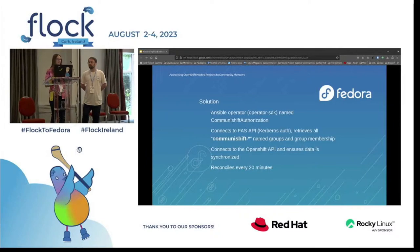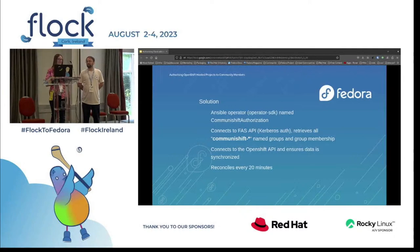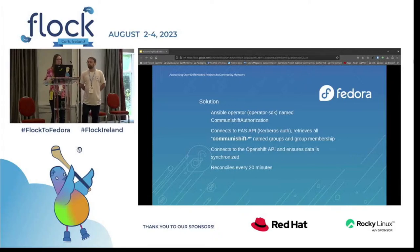We named our operator the CommunityShift Authorization operator. It connects to FAS — for those who don't know, FAS is a JSON gateway that queries FreeIPA, built for the Fedora account system. The operator connects through a keytab file and retrieves all the CommunityShift-named groups and their group members. It then connects to the OpenShift API and ensures all the data is synchronized — it's a one-way sync from FAS to the OpenShift API.